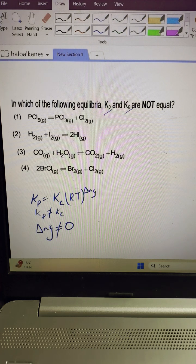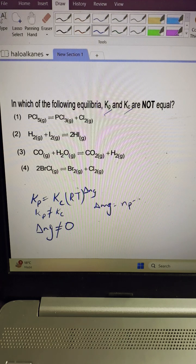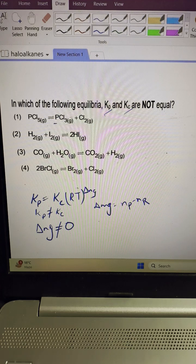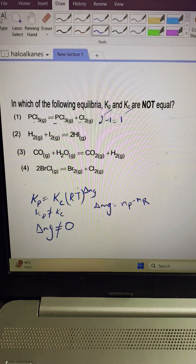Delta Ng is the difference of number of moles or number of molecules of products and number of moles and molecules of reactants. So we can see in this it is 2 minus 2 minus 1 equals 1.